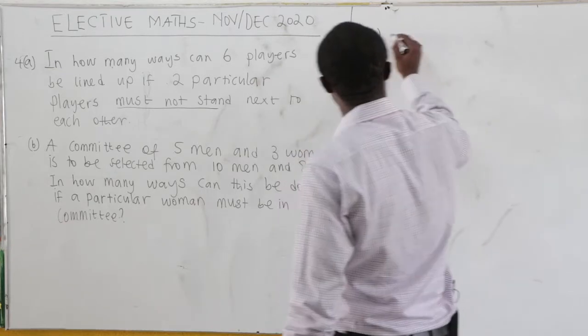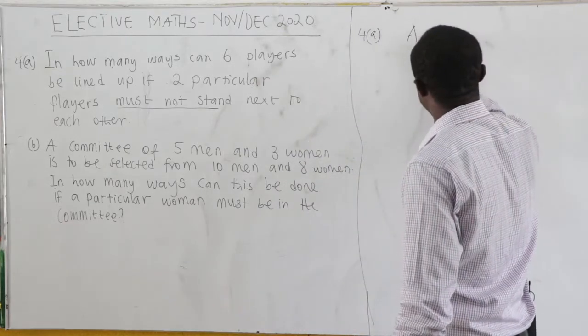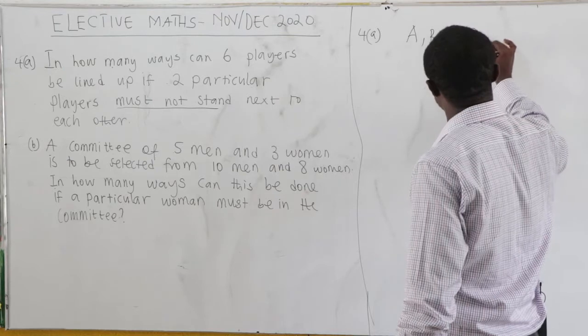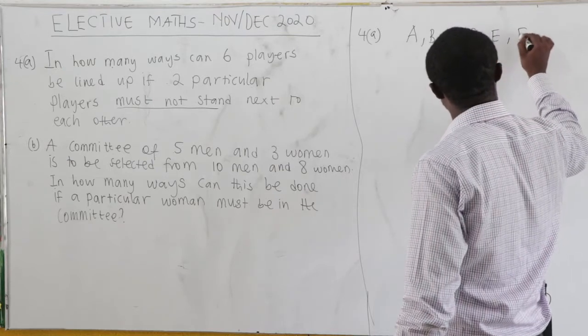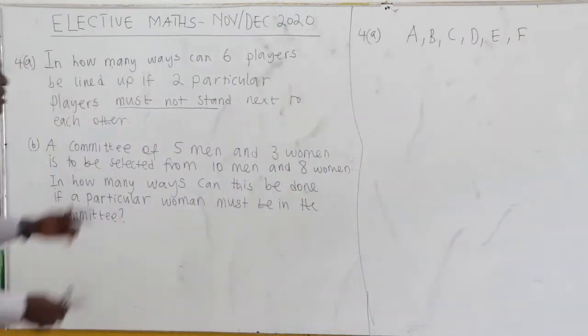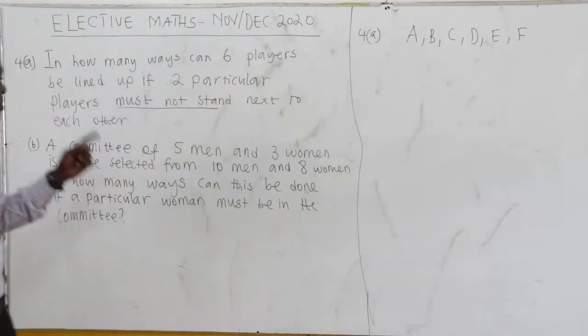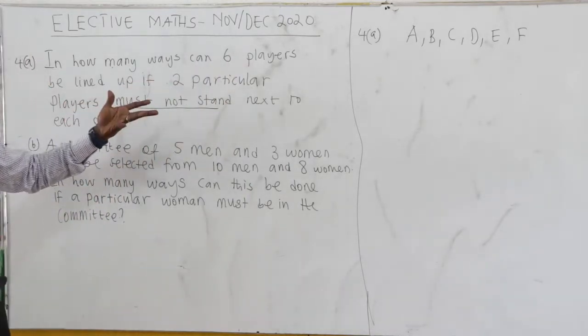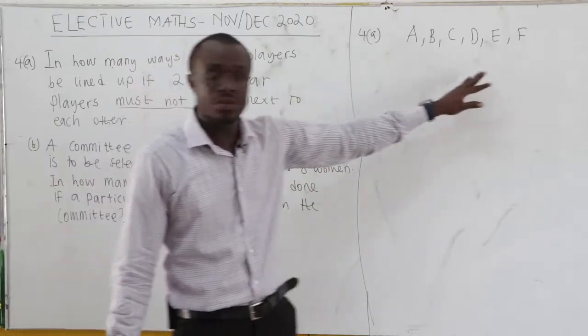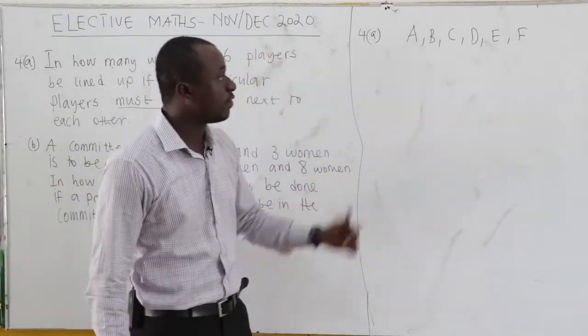So now let's suppose that these 6 players are A, B, C, D, E, and then F. Now the question is in how many ways can 6 players be lined up? So here let's suppose, let's not take any condition, let's arrangement of all of them.